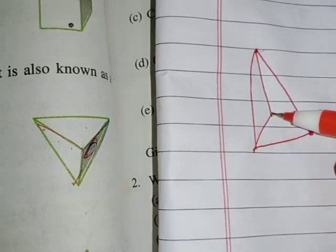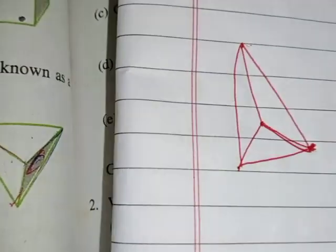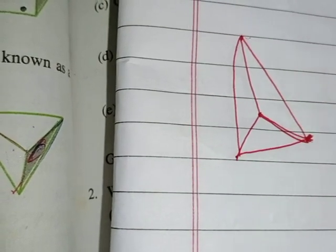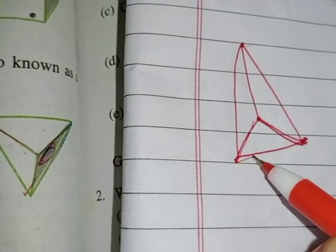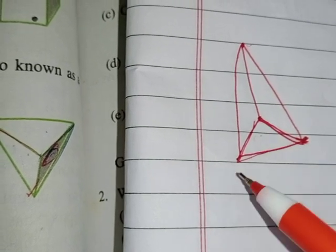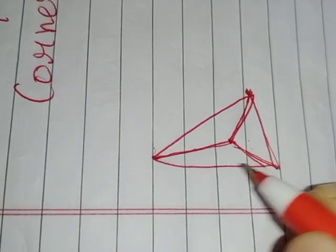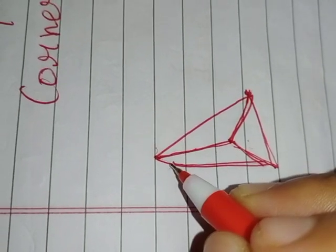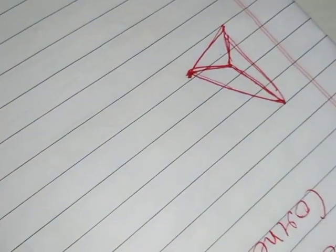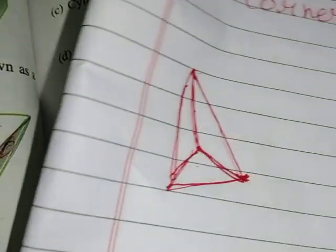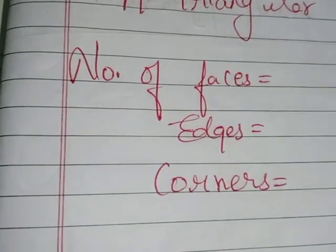The triangular pyramid will go to a corner like this. Its base will always look like a triangle. If this is the base we are taking, it looks like a triangle. If I turn this around and take another portion as the base, it again looks like a triangle. So always a triangular pyramid will have its base in the form of a triangle.